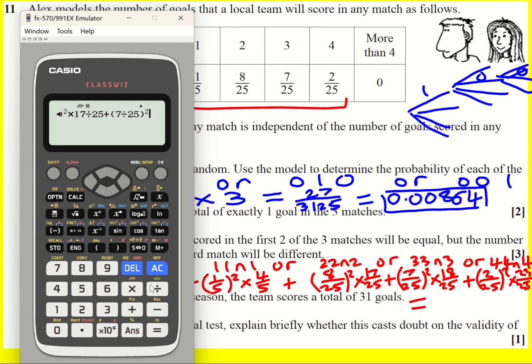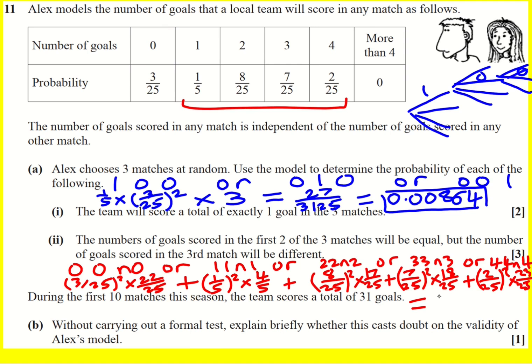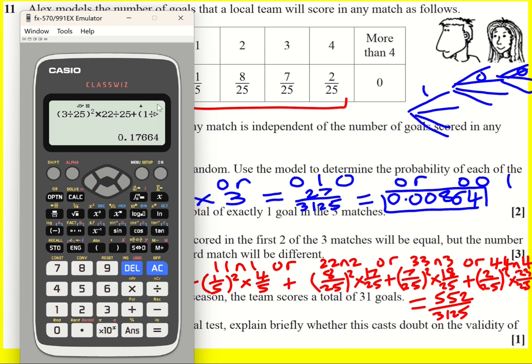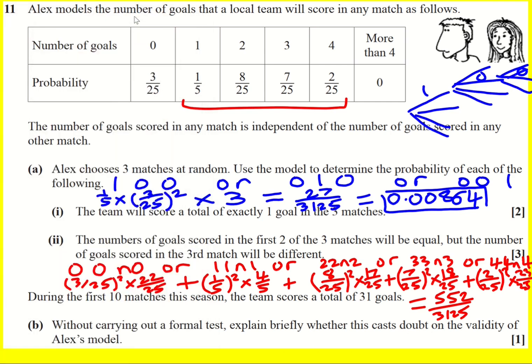You can use the fraction button, but that's a good way of writing the first one. This is the reason why it's the last question. It's a long calculation that you've got to realise what to do. Now we get 552 over 3,125. I'm going to write that. 0.177 to three significant figures. All right, well done.